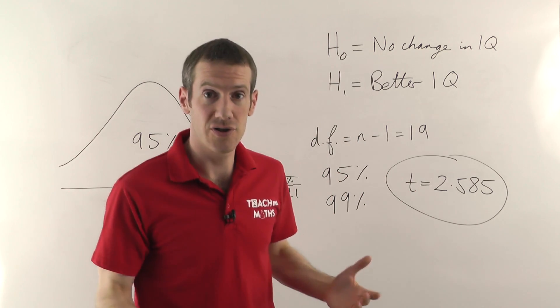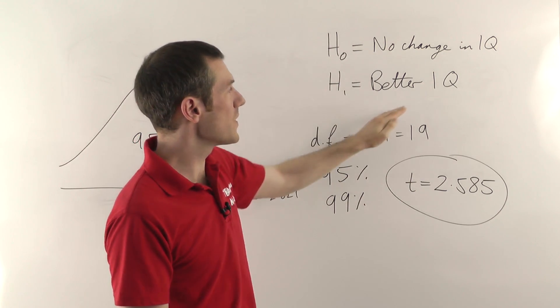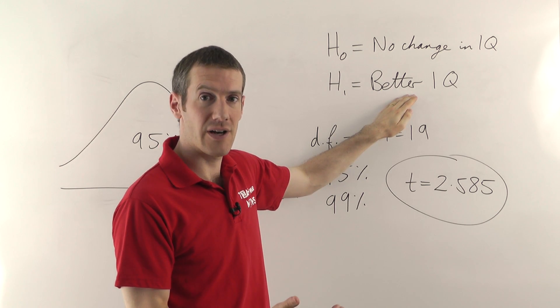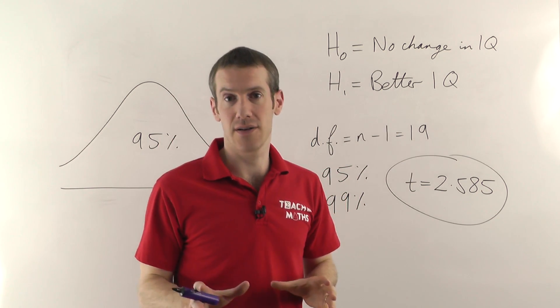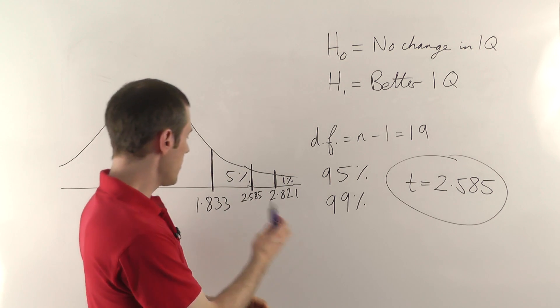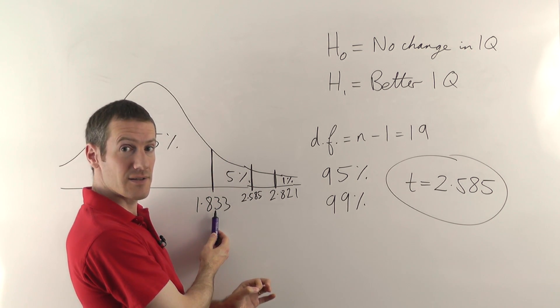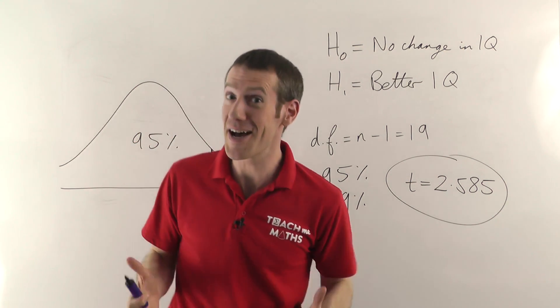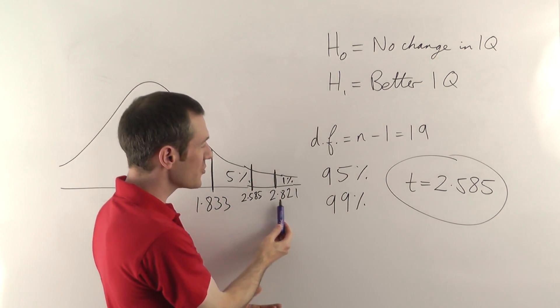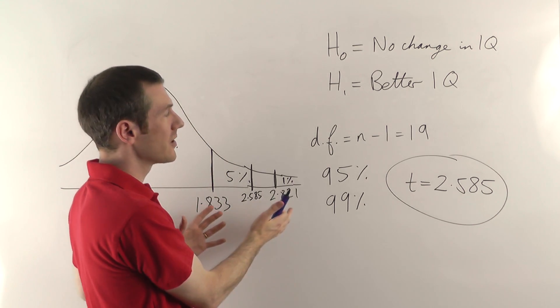So when we draw a final conclusion, we would say we can reject the null hypothesis, we believe that this drug does give you a better IQ, and we can say that with a 95% confidence, because our T value was bigger than the 95% T value from the table. We can't say that we're 99% confident. We would have to have a T value bigger than 2.821, which we don't. So that's how you draw a conclusion.